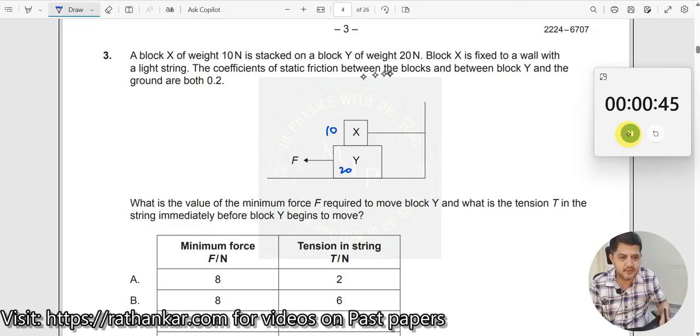Coefficient of static friction between the blocks and between block Y and the ground are both 0.2, which means there is a friction here, there is also a friction here. What is the value of the minimum force F required to move the block? How much you want to pull over here and what is the tension immediately before block Y begins to move?